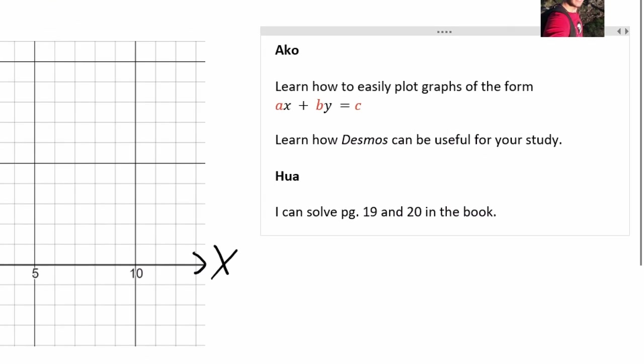Alright, so today we're learning how to plot graphs if you have something that looks like AX plus BY equals C. It's linear, there's a secret to it. And also how to use Desmos.